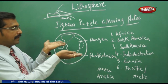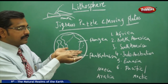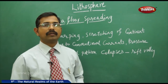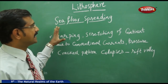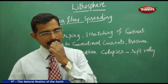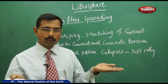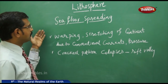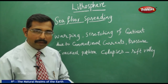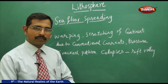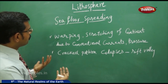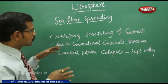These plates meet and move, and the upper part of the mantle is pliable. Now let's discuss sea floor spreading — how the sea floor spreads day by day. Taking the example of the Pacific Ocean at the mid-ocean ridge, there are cracks due to convectional currents and pressure from the mantle. The very hot molten lava puts pressure on the Earth's crust, causing it to warp, stretch, and form cracks.